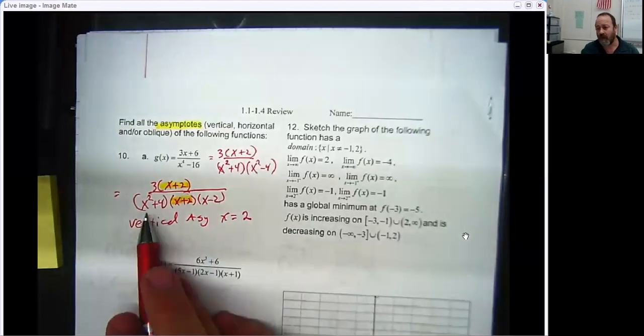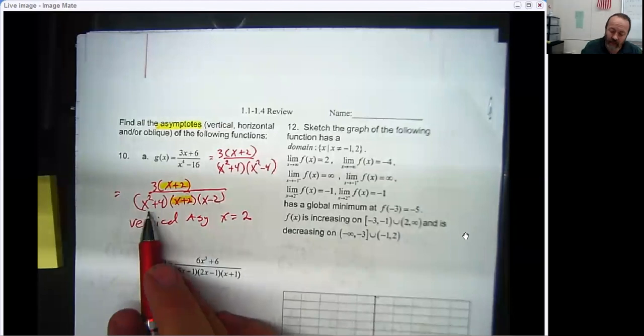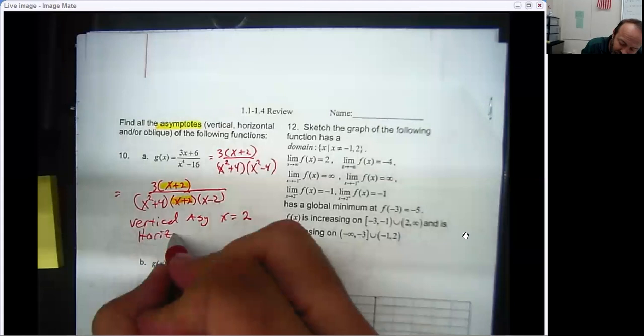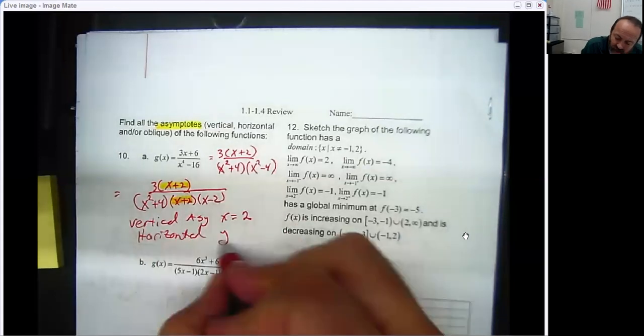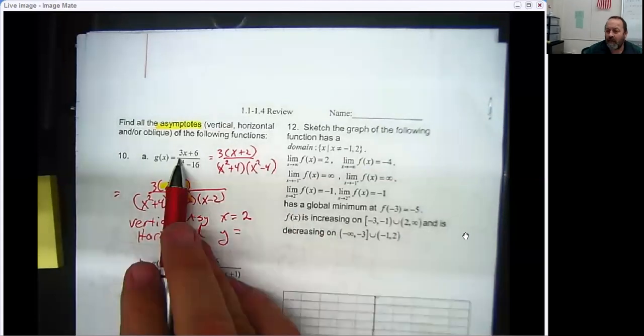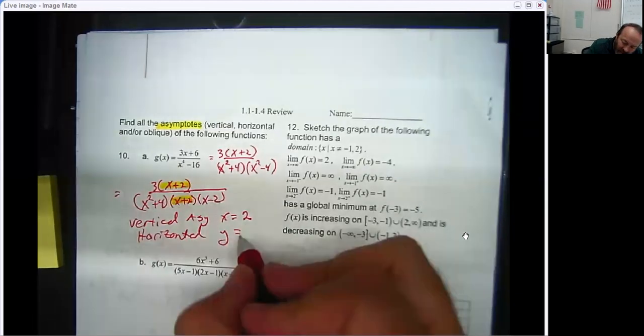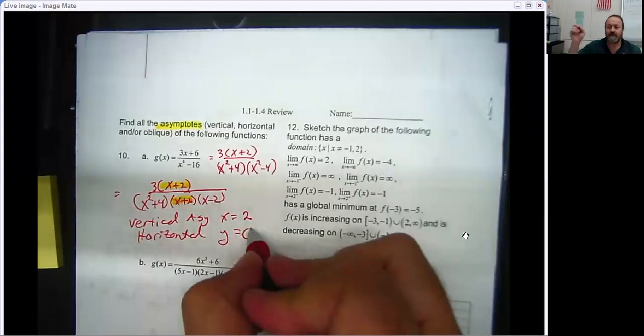x squared plus 4 is always a positive value. Now, as far as horizontal asymptotes, there is one because if you look at the powers, the top power is just a first degree, and the bottom is a fourth degree. So since the bottom is larger, we said any time the degree of the bottom is larger, there is an end behavior asymptote at 0.